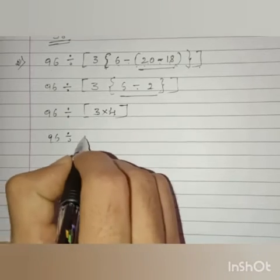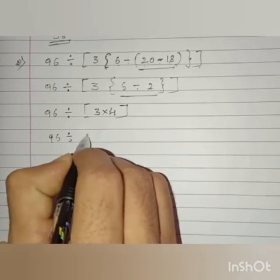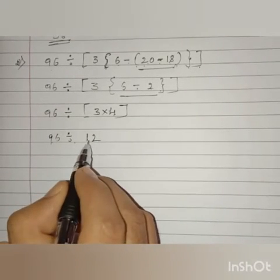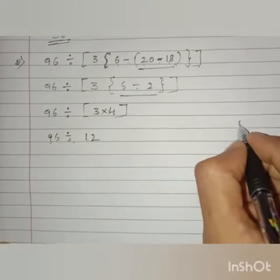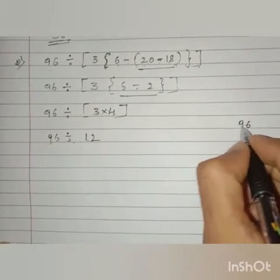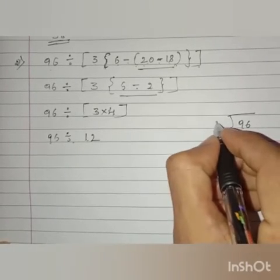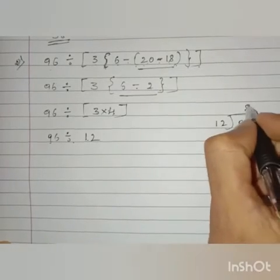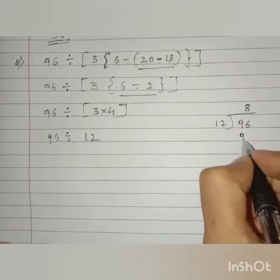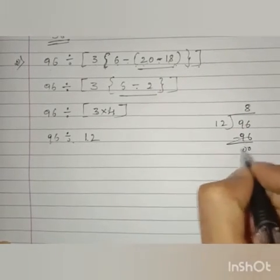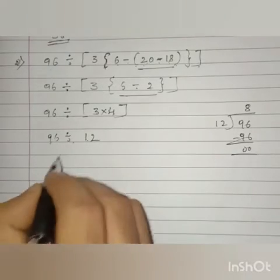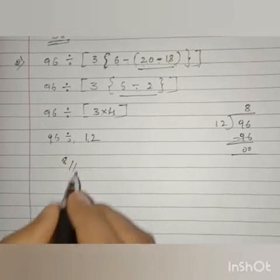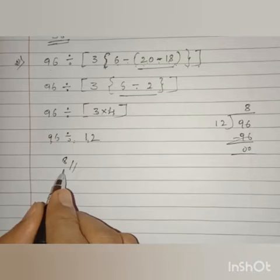So we have 96 divided by big bracket, and 3 times 4 is 12. So we got 96 divided by 12. Now 12 times 8 is 96, so the answer is 8. Got it, children?